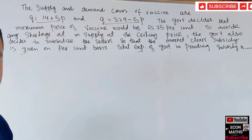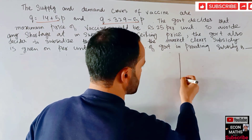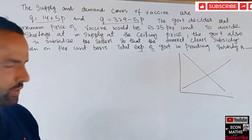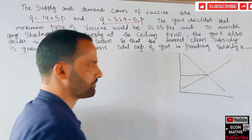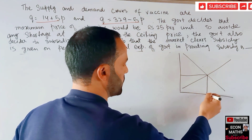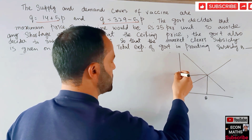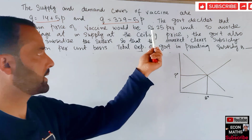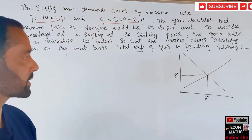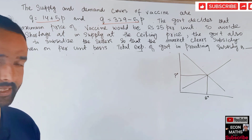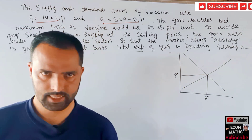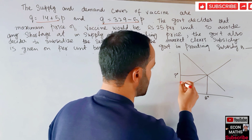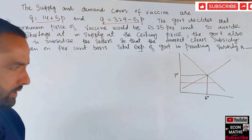First, I will draw the graph to make this clearer. This is our demand function and this is our supply function. As we know, equilibrium occurs where demand and supply intersect — this is P-star and Q-star. The government has imposed a price ceiling, and in the case of a price ceiling, the price is always below the equilibrium price. So the price ceiling of ₹25 is shown below the equilibrium.